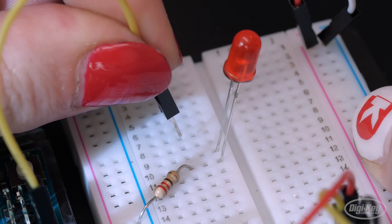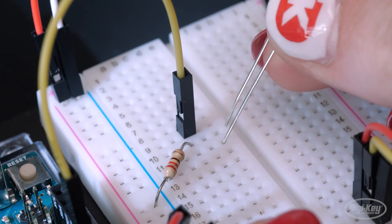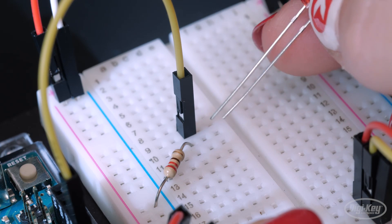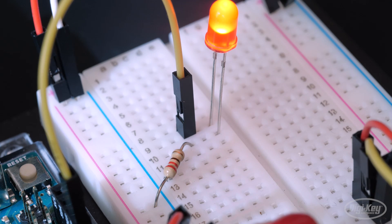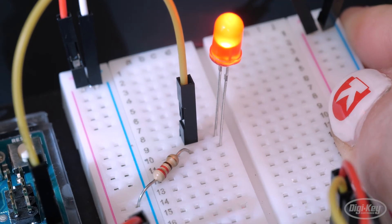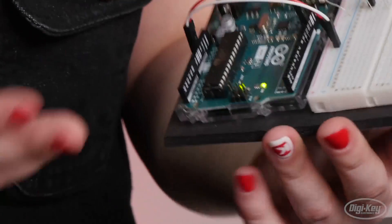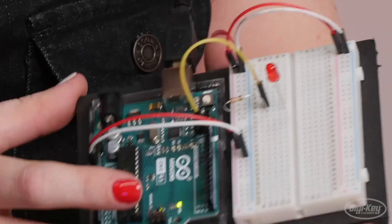If it doesn't, double check that your wires are all connected and that your LED isn't backwards. The connections are pretty small, so it's super easy to plug a wire into the wrong row. Once your LED is blinking, it's time to dig into the program controlling it.